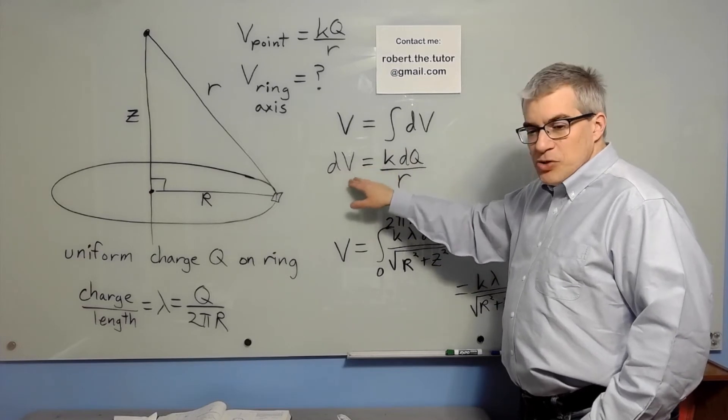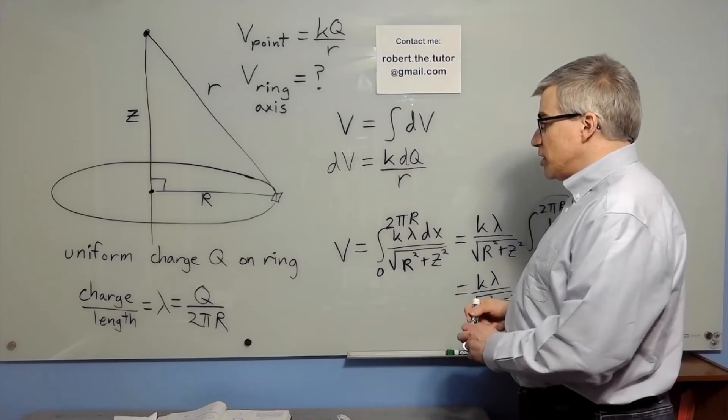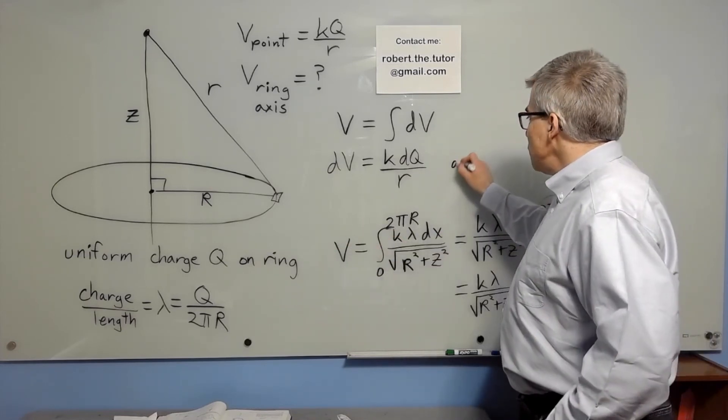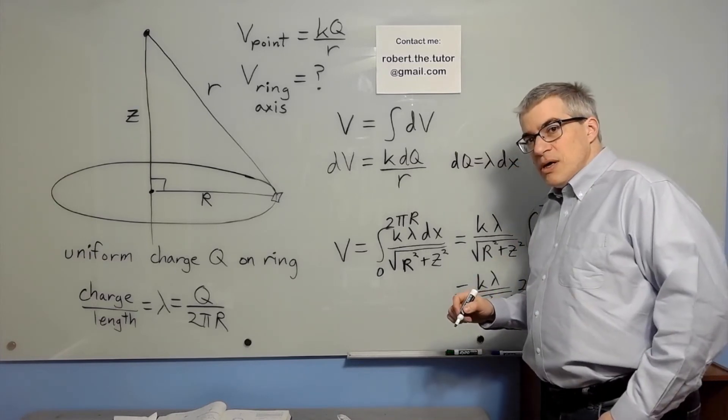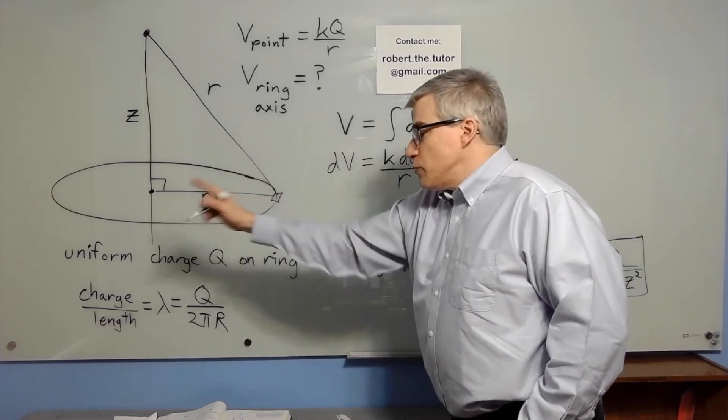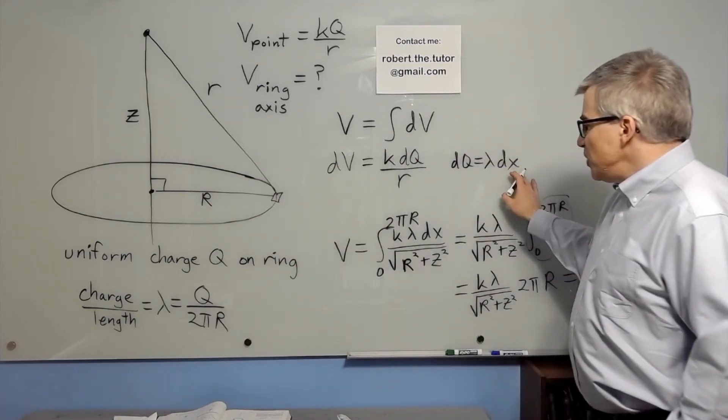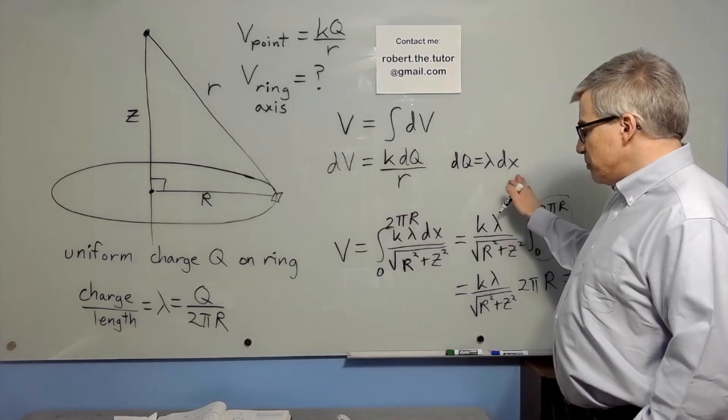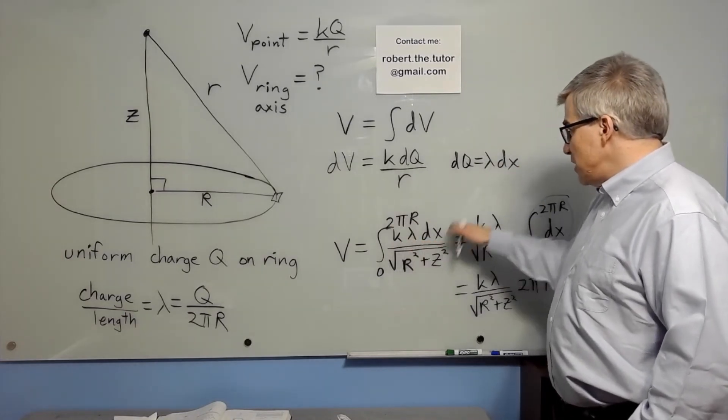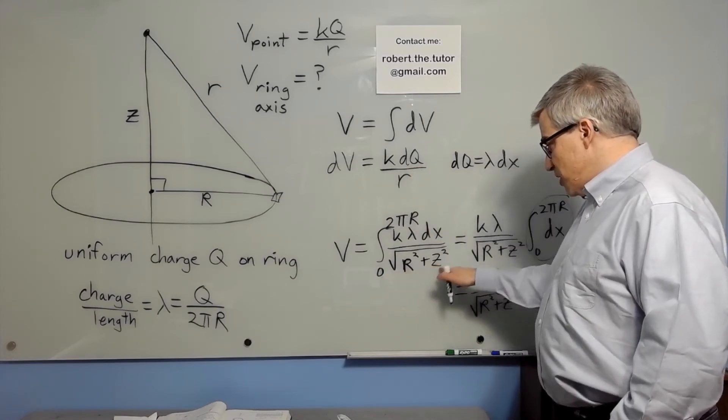One little bit of voltage is coming from one little bit of charge, and a little bit of charge dq would be lambda times dx, and we know what x ranges over, it goes from 0 to 2 pi R, which means our total voltage is add up from 0 to 2 pi R all the little bits of voltage, K lambda dx over little r, which is square root of big R squared plus Z squared.